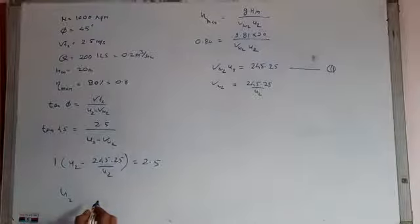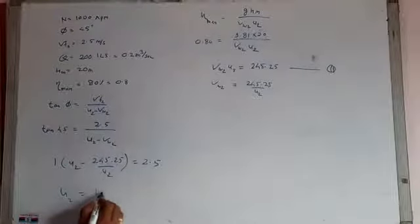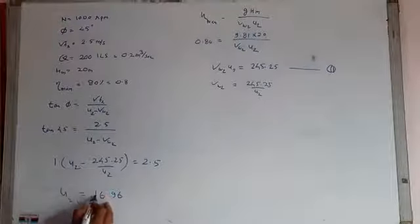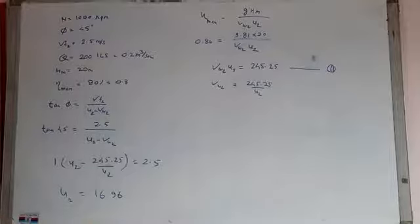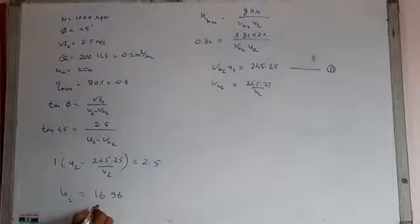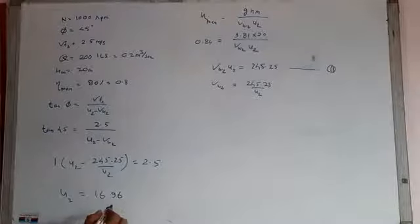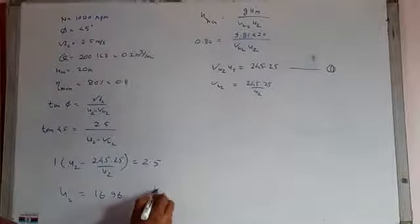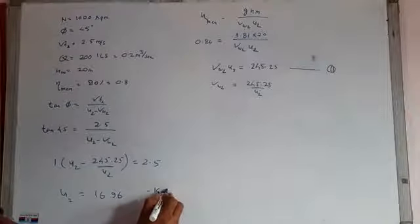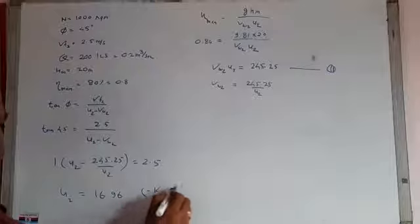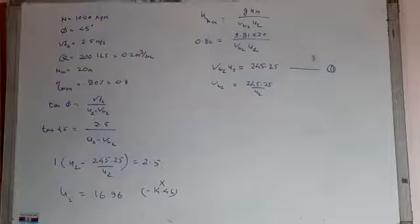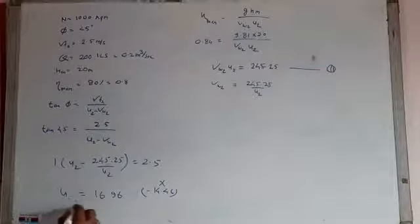So the value of U2 from here is 16.96. This is a quadratic equation here and 2 values of U2 we will get from here, that is 19, 16.96 and one more value is 14.46. This value is negative, so we left this negative value and we will take 16.96.